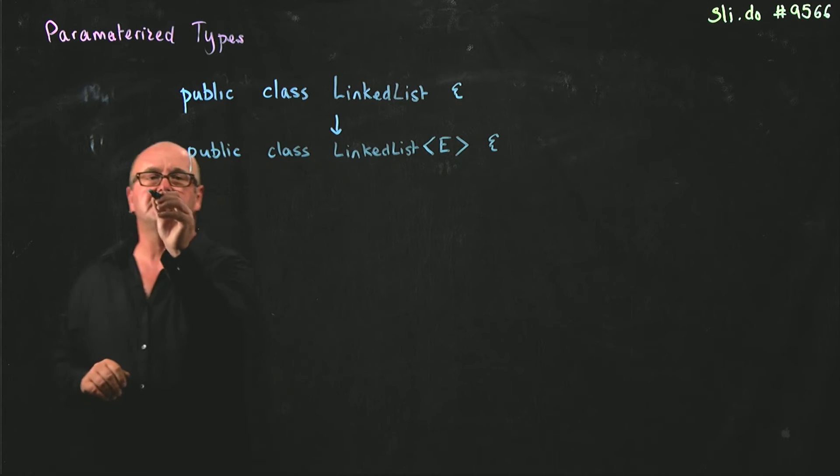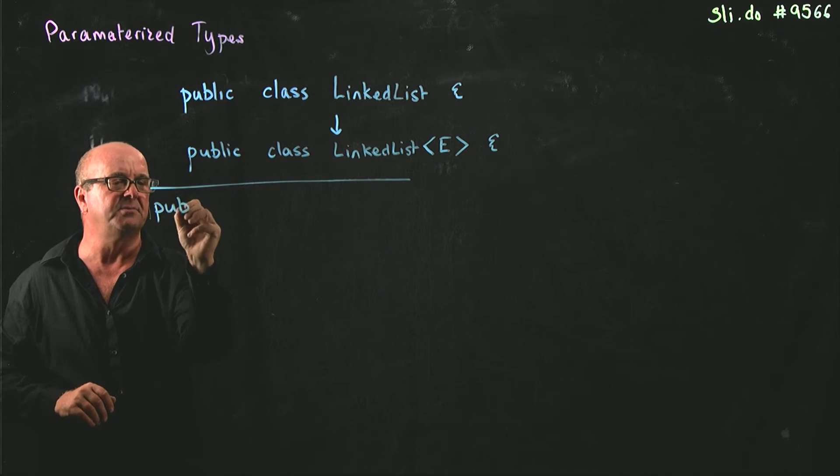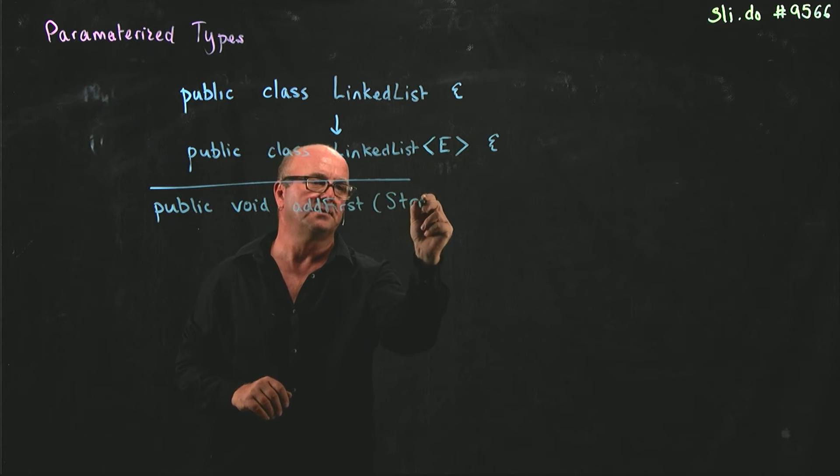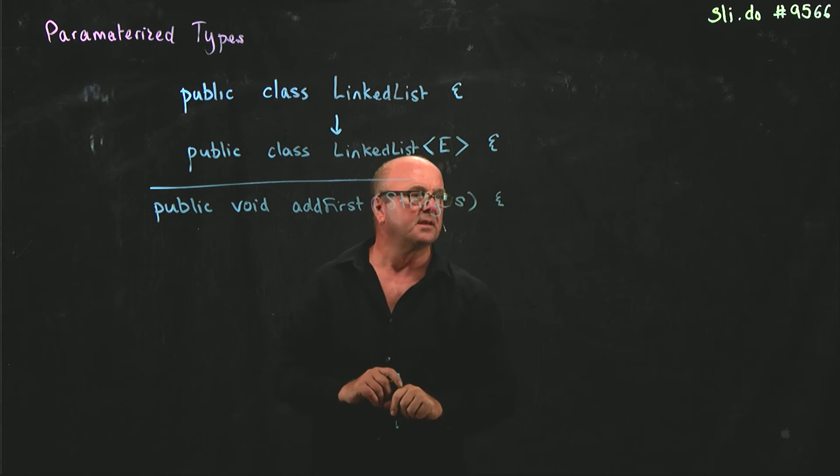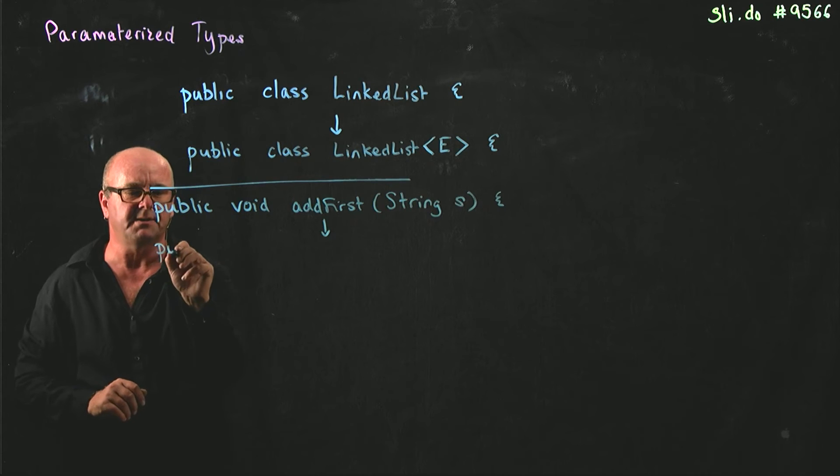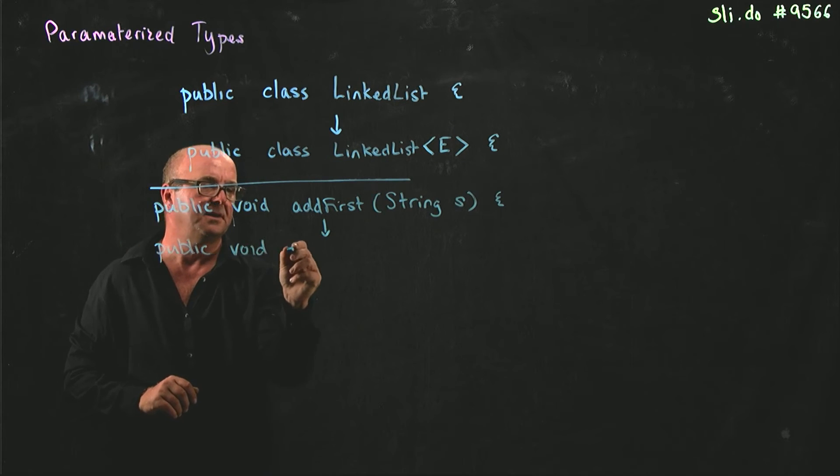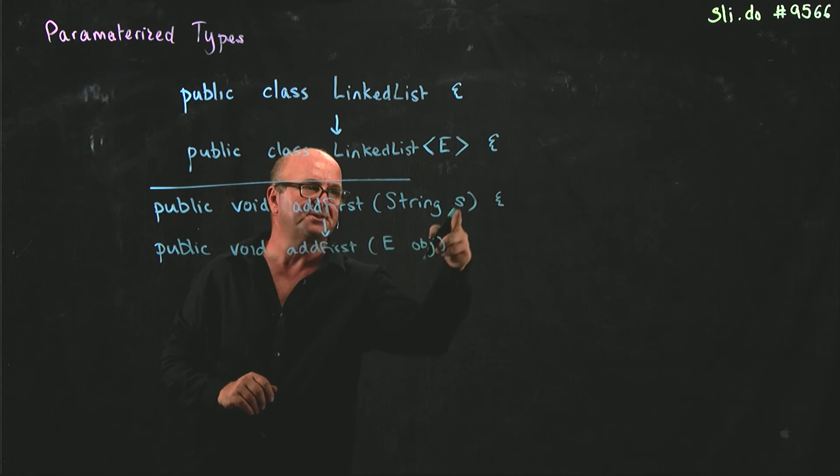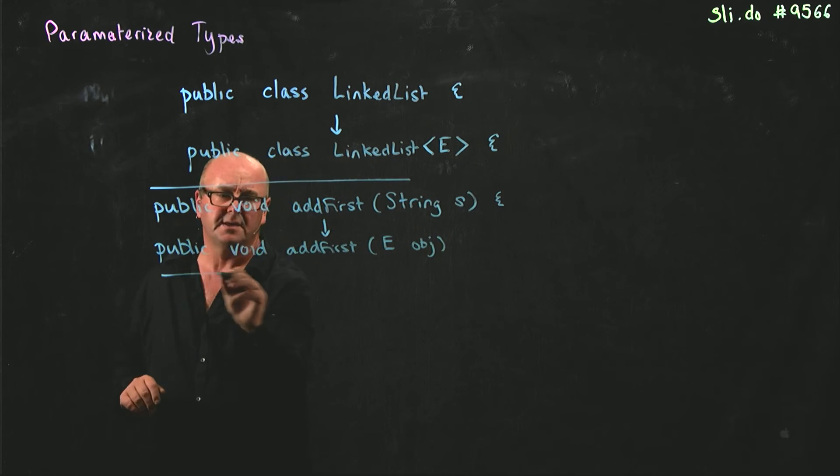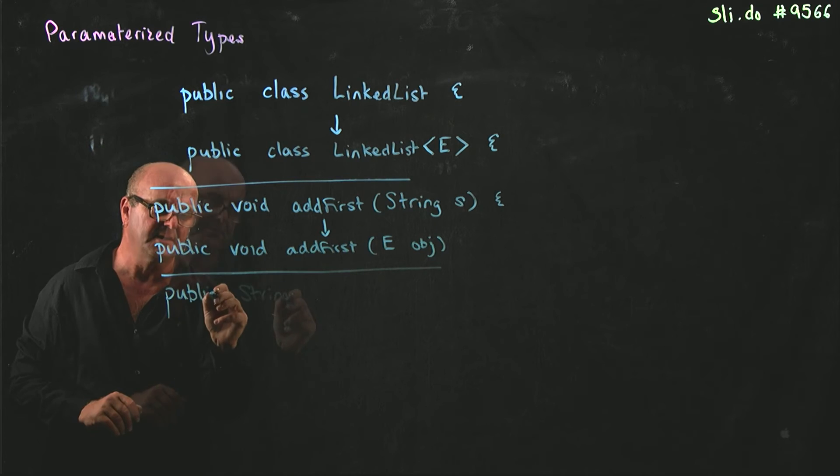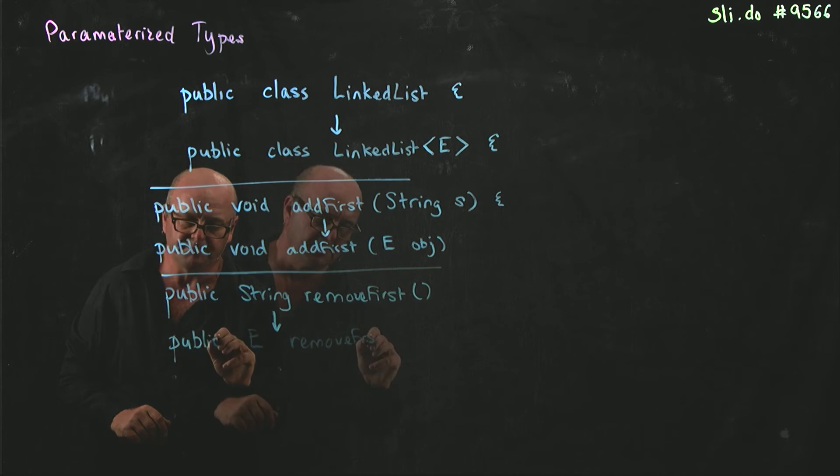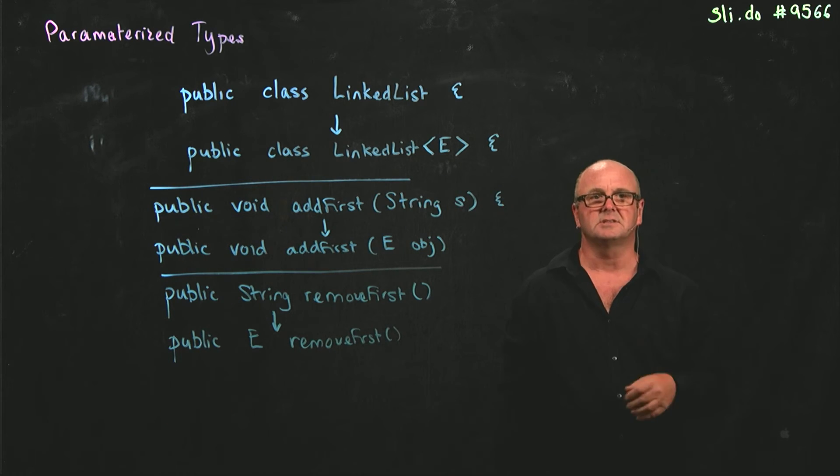So for example, in our methods, we may have a method that normally would be something like public void addFirst(String s). If we're using generics, we change that to be public void addFirst(E object). If we have a method that returns a string, removeFirst, that method, the string becomes our E. So any time we want to use a string or an integer or a float or anything like that, we replace that with an E.